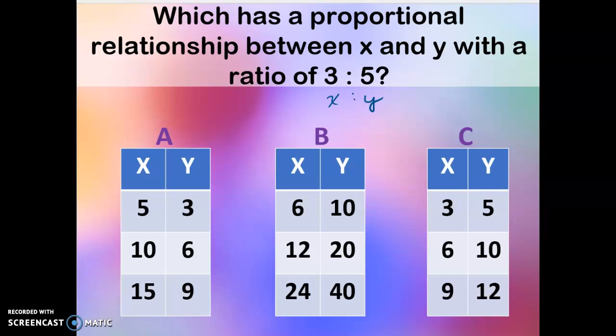So we look for 3 to 5. A is reversed. B is a possibility. C is 3 to 5. That's correct.